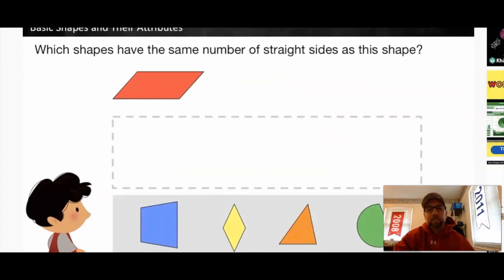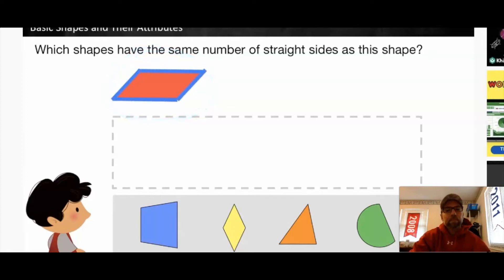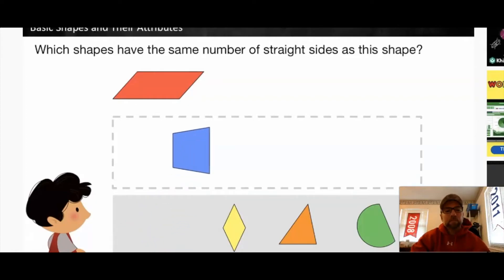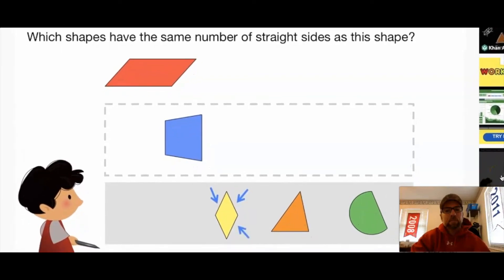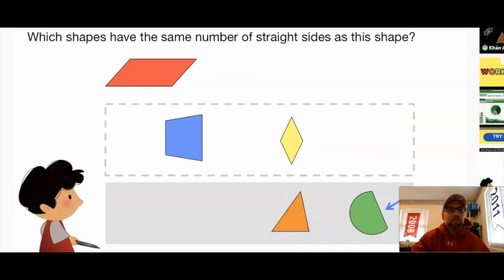Let's look at an example: which shapes have the same number of straight sides as this shape? This shape has one, two, three, four straight sides. Which shapes below also have four straight sides? This shape has one, two, three, four straight sides — it has the same number. This shape has one, two, three straight sides — it does not have the same number. This shape has one straight side — it also does not match. In this lesson, you learned about shapes and their attributes. Thanks for watching.